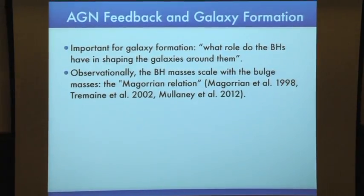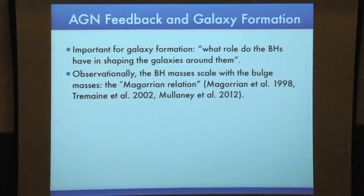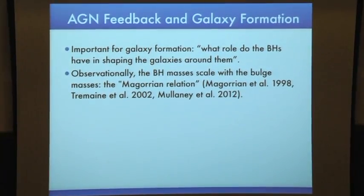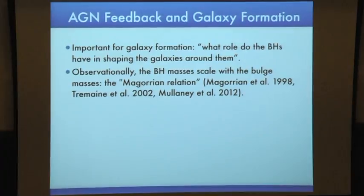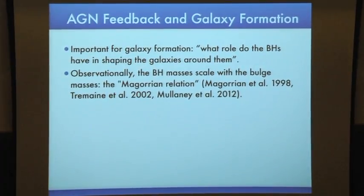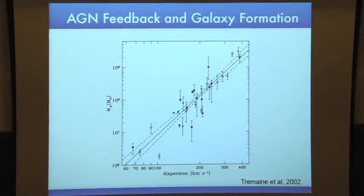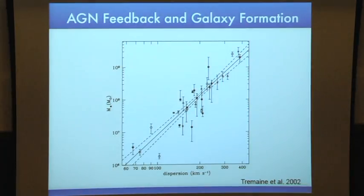One of the most cited phrases in the introduction of galaxy formation papers is: what role do black holes have in shaping the galaxy around them? Observationally, it was found that black hole masses scale with bulge masses — what is known as the Magorrian relation — or with the velocity dispersion. However, from this plot, you can tell whether the black hole and the galaxy formed at the same time, or if the black hole is a byproduct of galaxy formation.